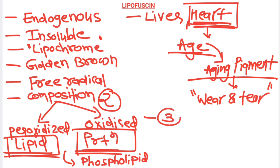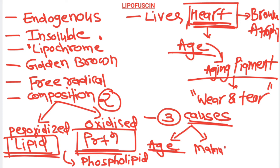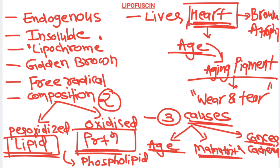There are three causes of lipofuscin pigment deposition in the body. One is advanced age — with advanced age, the pigment gets deposited in the heart, which is known as brown atrophy of heart. Second, it can be seen in severe malnutrition patients. The third important cause is cancer — cancer-induced cachexia can lead to lipofuscin pigment deposition.